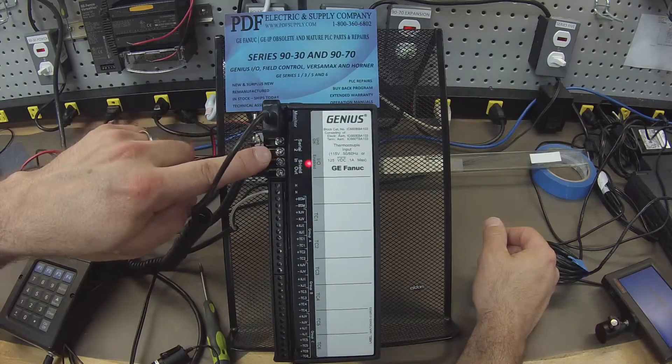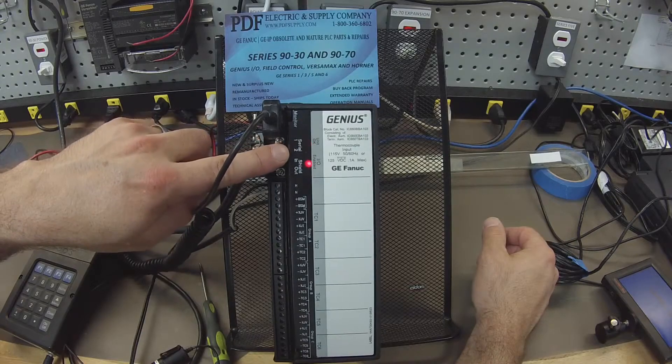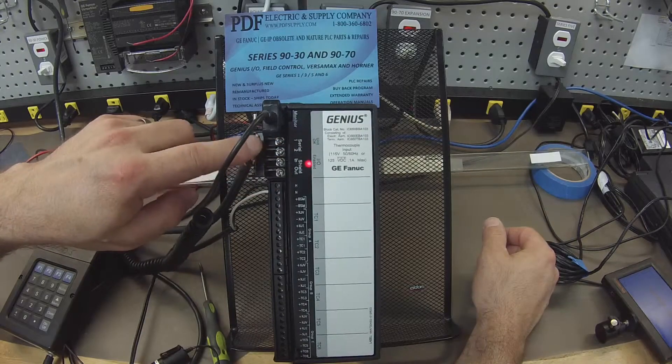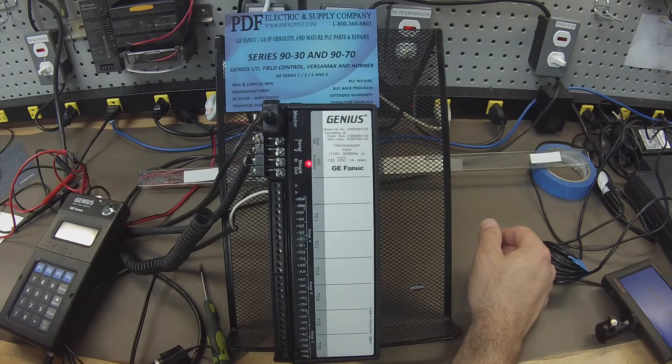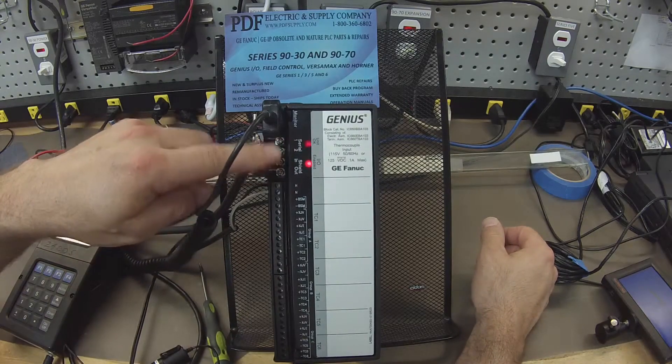That tells me that the serial port—this is coming through Serial 1, Serial 2, and shield in and out, and going back and forth to the Genius bus controller—is communicating and that this port is working good.